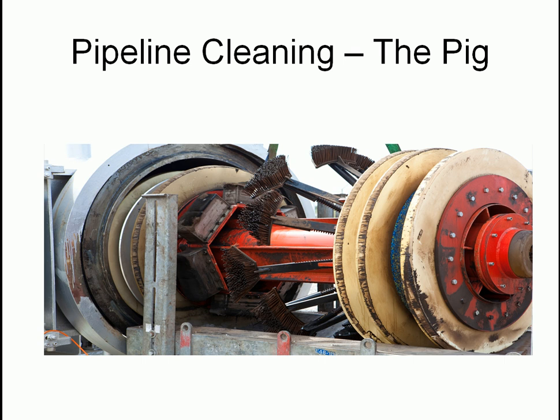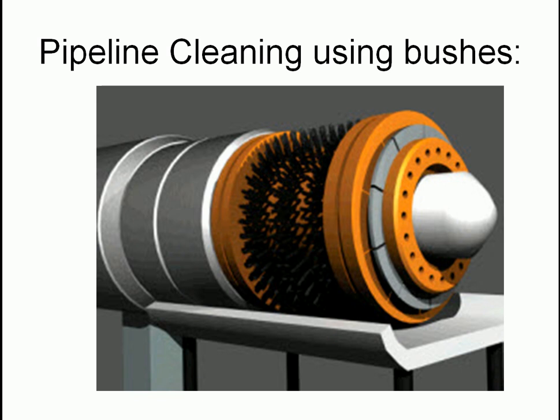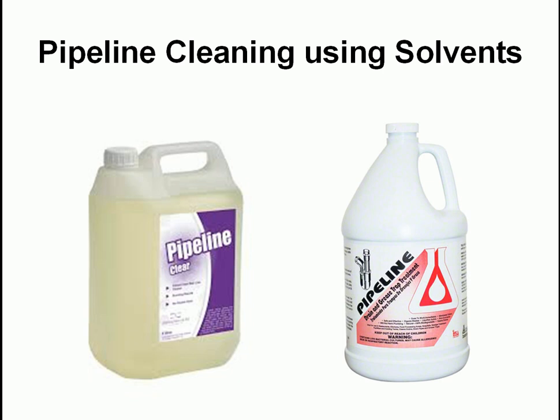Now we're going to look at cleaning pipes - the pig. The first one you can see has rubber rings which scrape against the side of the pipe, but also a set of spring-loaded brushes. As this scraper pig is pushed through the pipe, those brushes go on the side of the pipe to pick up any dirt and scrub it clean. There are also other methods - chemicals can be used to get any clogged-up material away from the pipe walls. Chemicals are quite expensive and you don't want to contaminate the product being piped. There are cleaning solvents used to clean pipes.